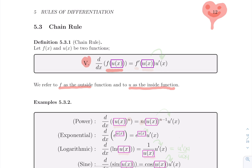The trick is: first compute f prime without touching the inside. For example, sine of x squared becomes cos of x squared — you only compute the derivative of the outside and leave the inside alone. I like to put the inside formula in a box to remember not to change it. Then, the chain rule says you multiply afterwards by the derivative of the inside formula — you bring out that inside derivative and you have your chain rule.